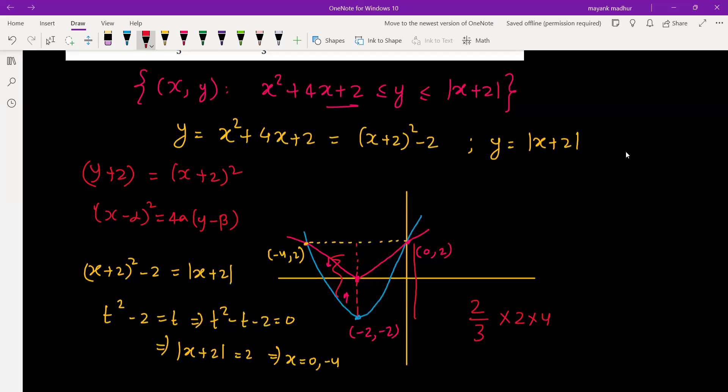Similarly for this part, we multiply by 2. But we have to subtract this area to get the required area. So minus this area of the triangle, which is half times base times height. The base is 4 units and height is 2 units, so ½ × 4 × 2.